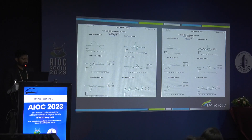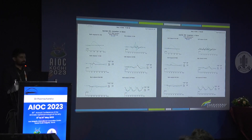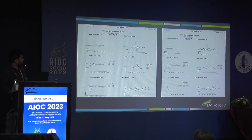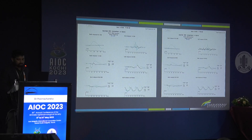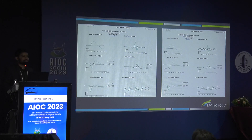This is the full-field ERG. Whatever is in blue represents normals; the black waveform belongs to the patient. If you look at the dark-adapted 0.01 ERG, it is almost flat — there is no detectable rod-driven response. Even the cone light-adapted response shows reduced amplitude and a slight delay in latency. So now we know that, though the fundus looks normal, there is something wrong in the retina.